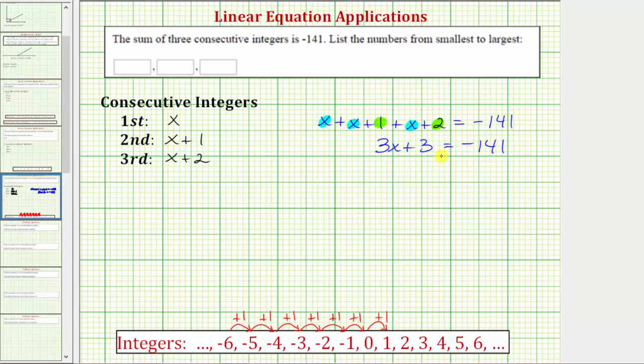Now we have a basic two-step equation to solve. The first step is to add or subtract to isolate the variable term. To undo plus three, we subtract three on both sides. Simplifying, subtracting three undoes plus three, or three minus three is zero. So we have three x equals negative 141 minus three equals negative 144.